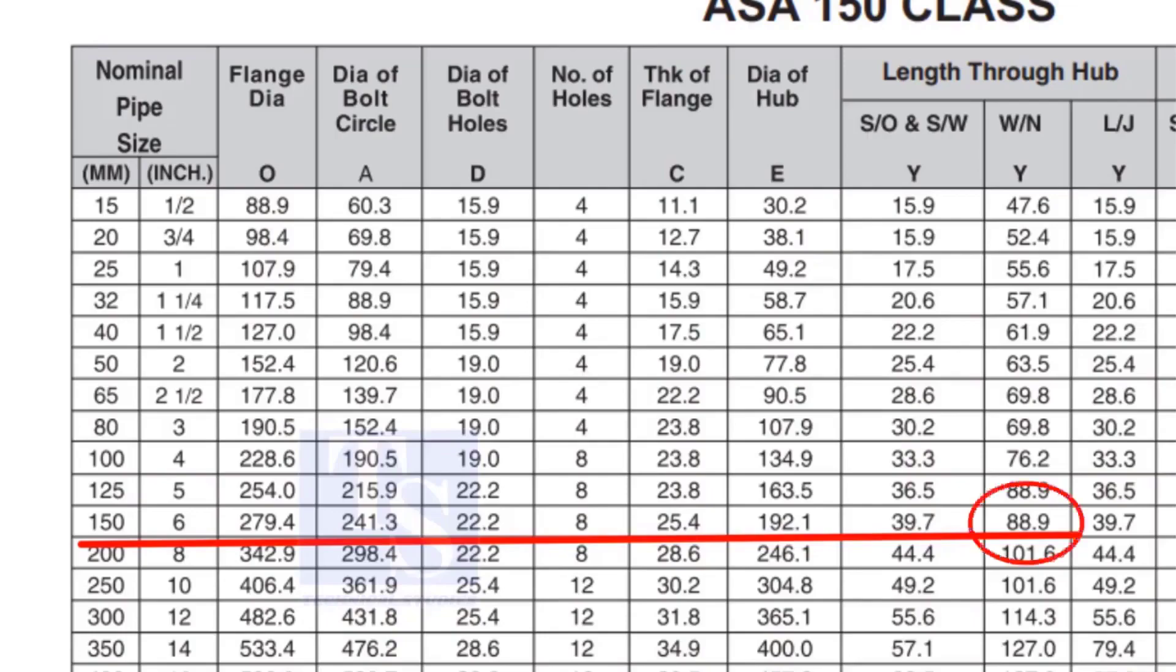Check the height of the flange in the table. Since the pressure rating is 150, the height of the flange is 88.9mm. Note down the height.